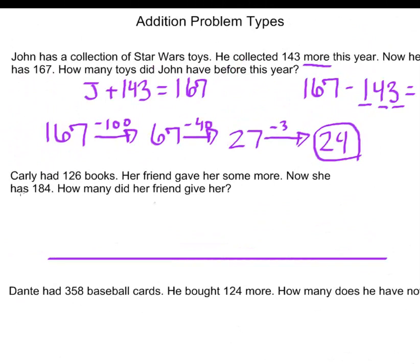For my second problem, let's read and see how it is a little different from the first addition problem that we looked at. Carly had 126 books. Her friend gave her some more. Now she has 184. How many did her friend give her?